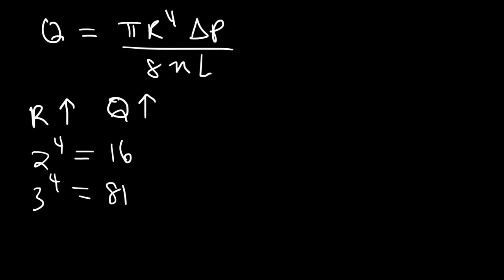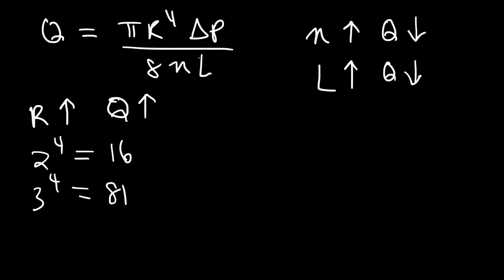The volume flow rate is highly dependent on the cross-sectional radius of the pipe. It also depends on the coefficient of viscosity. If you increase the coefficient of viscosity, the volume flow rate will decrease. For very viscous liquids like honey and syrup, a greater pressure is required in order to keep the fluid at a constant flow rate. The flow rate is inversely related to the coefficient of viscosity and also inversely related to the length of the pipe. However, it's directly related to the pressure difference — if you increase the pressure difference between two points, the volume flow rate will increase.